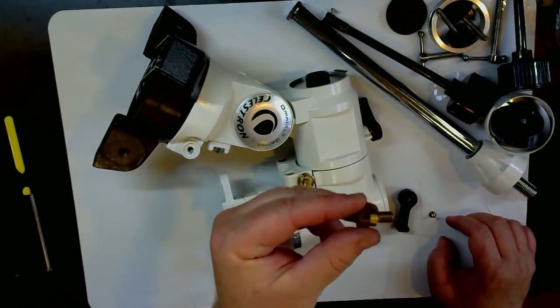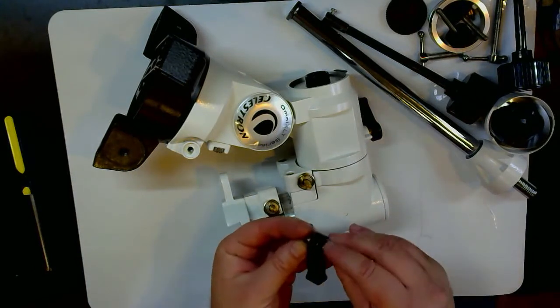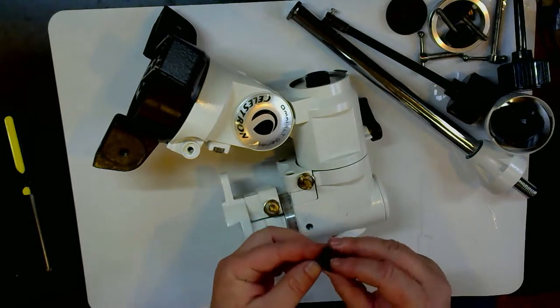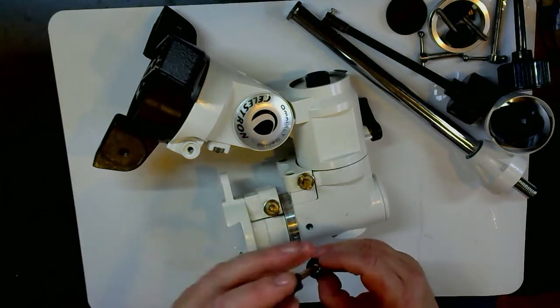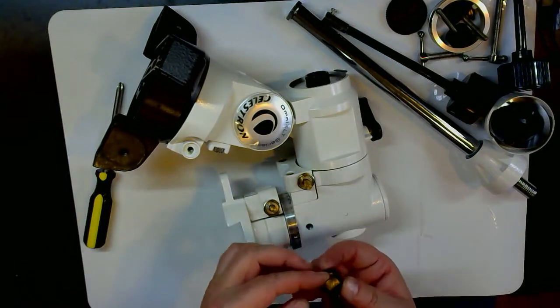That's what it looks like there. I would take these three pieces and just put them back together loosely so you can keep track of them. Also be aware that when you get in here, this is going to have some of the factory grease inside right here on the threads.